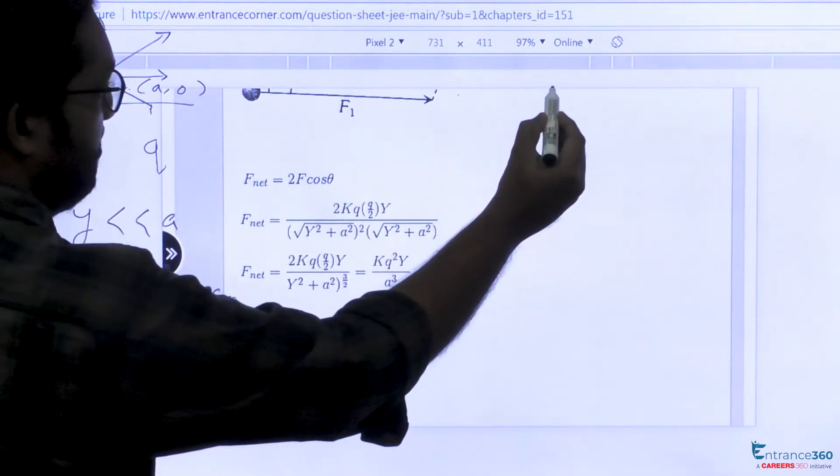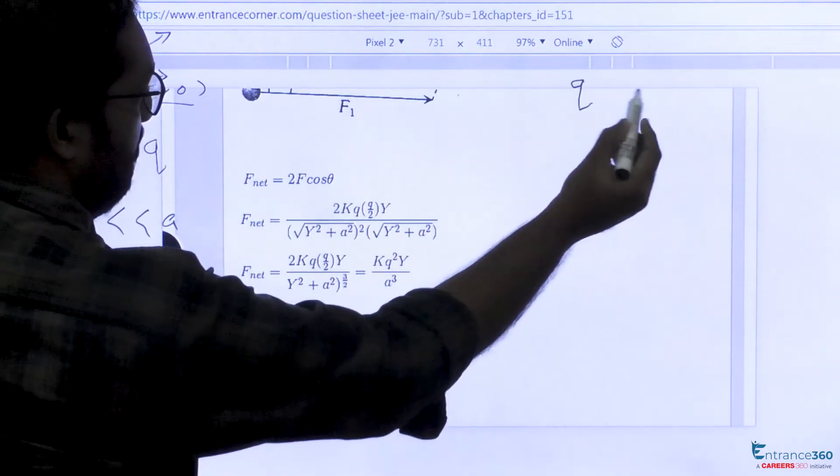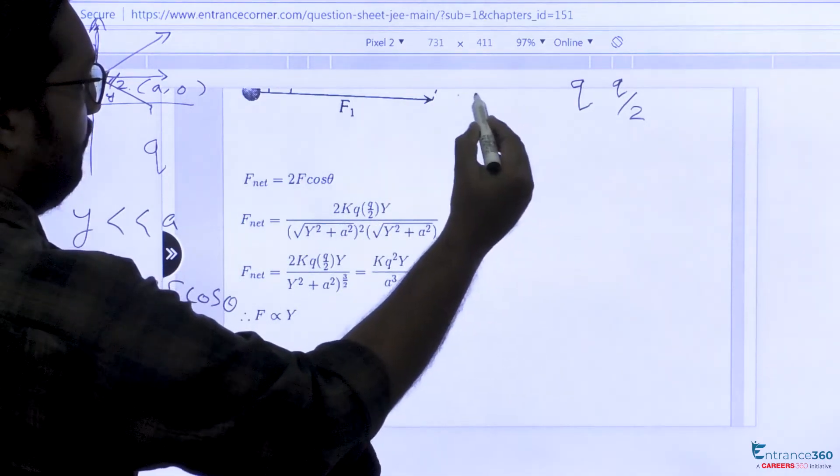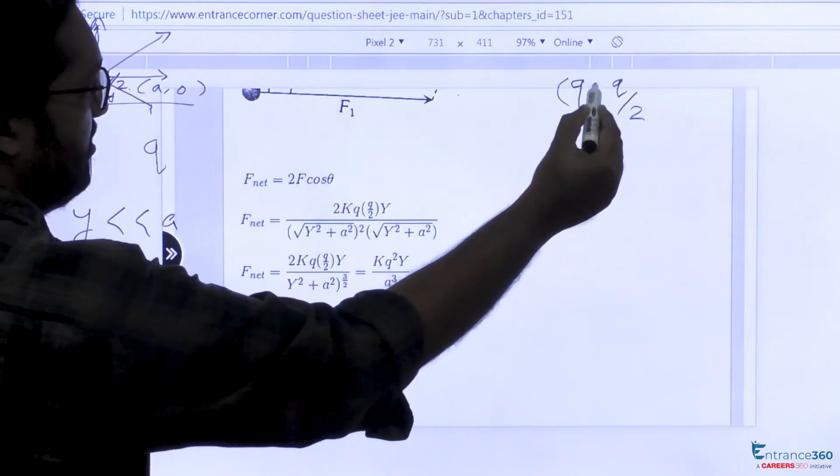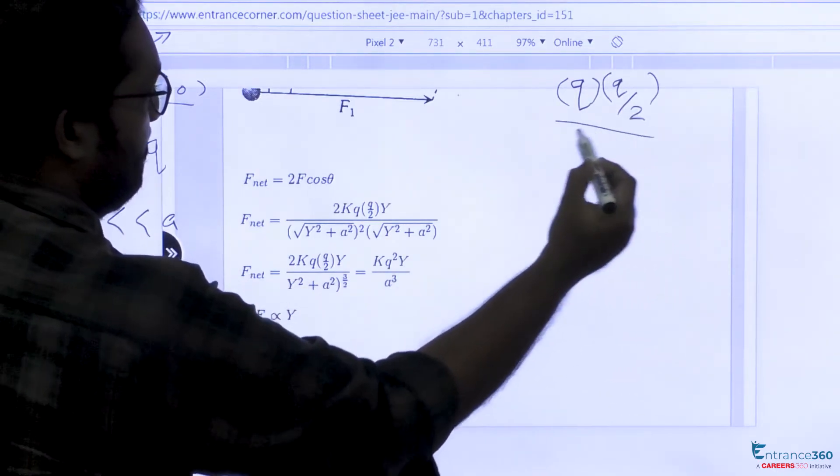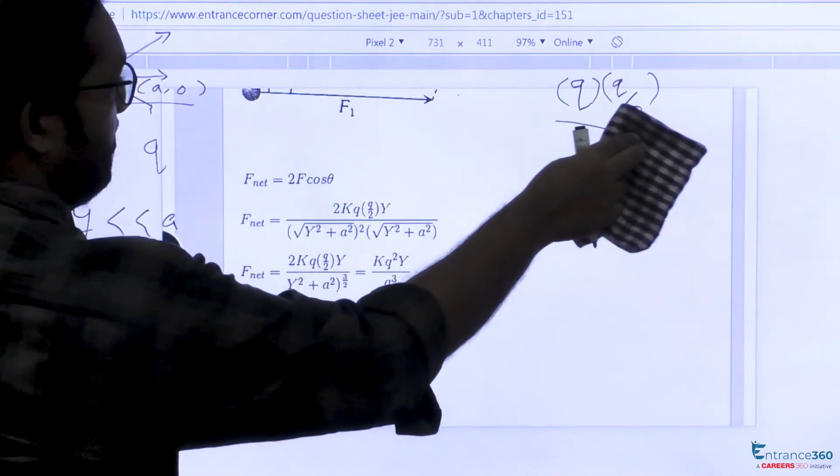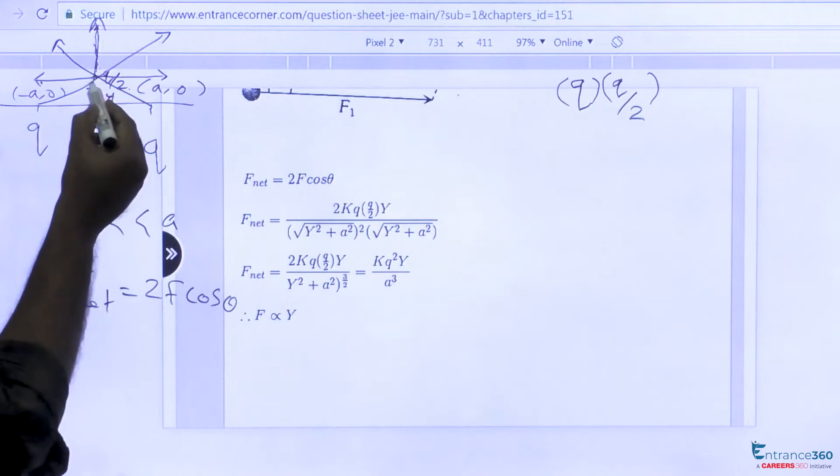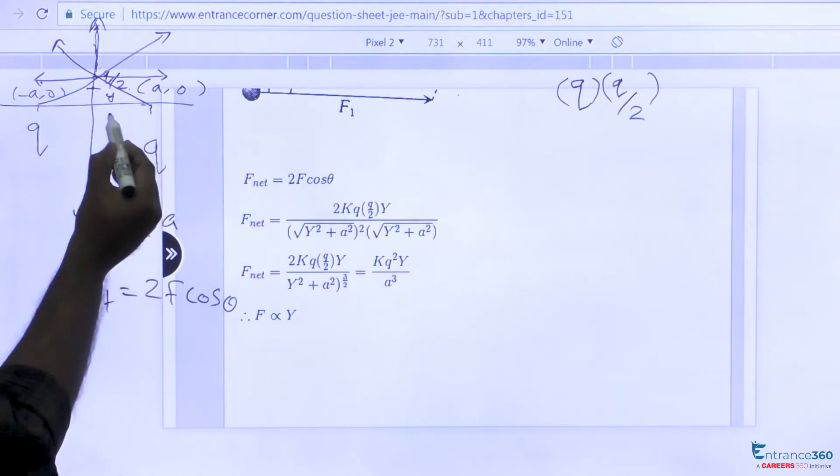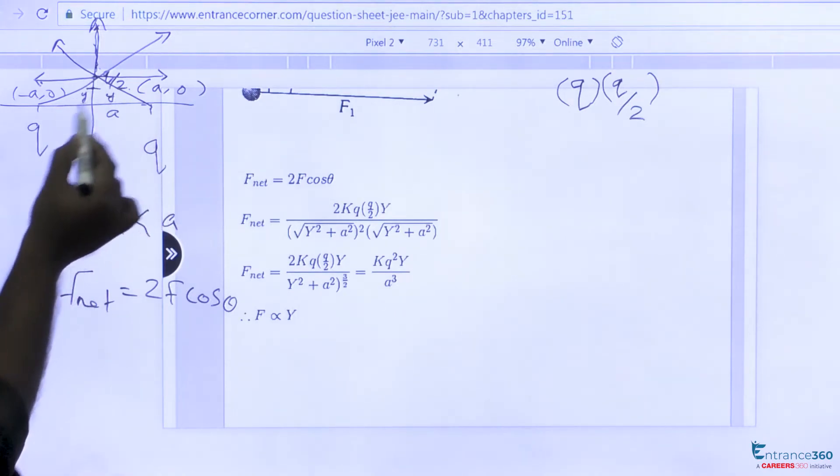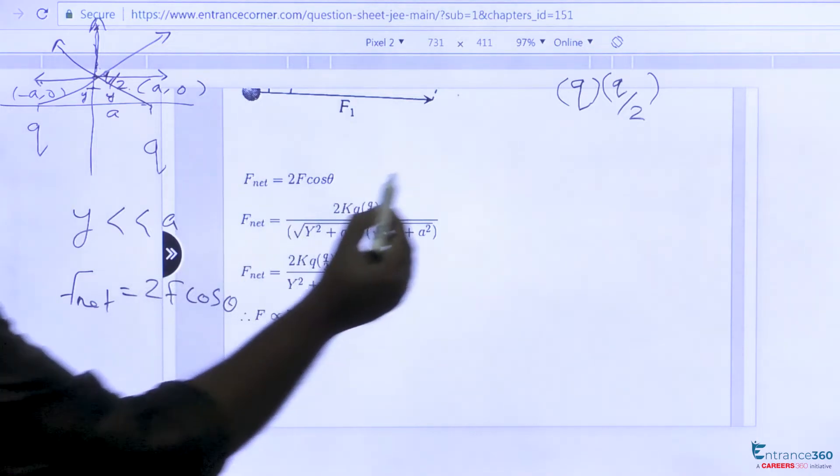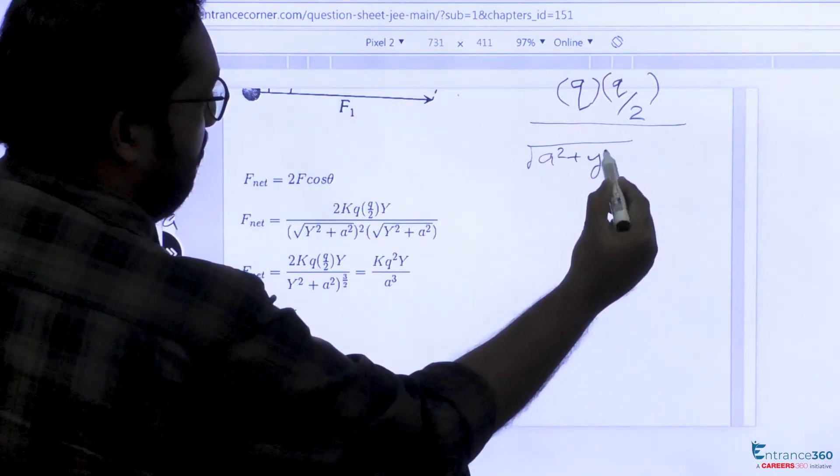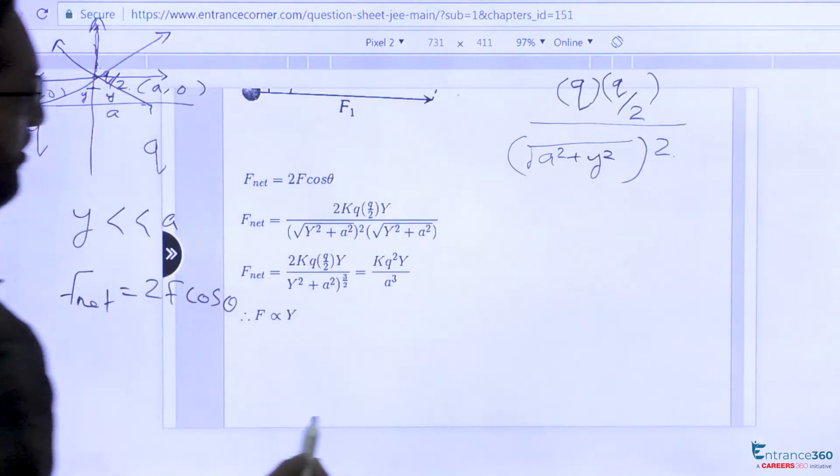We have charge q and another charge q/2. Force is proportional to the product of charges divided by distance squared. The distance here is a and small y, so this distance will be √(a² + y²). The force is the product of charges divided by (a² + y²), which is the force between the two charges.